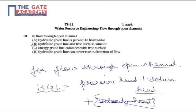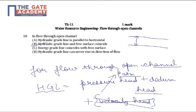For flow through open channels, the pressure is atmospheric. If we take P-atmospheric as absolute pressure, the HGL coincides with the level of flow, because that corresponds to the datum head. If the depth of flow in the open channel is Z, then this datum head coincides with the HGL, making B the correct choice for question number 18.